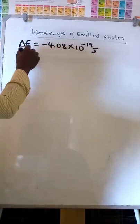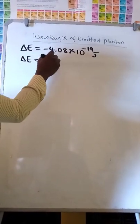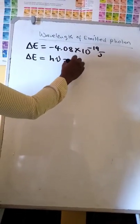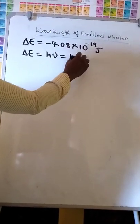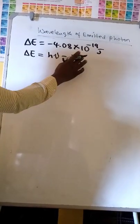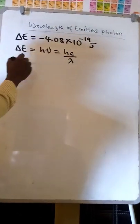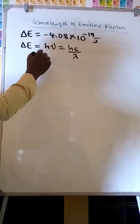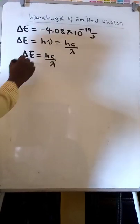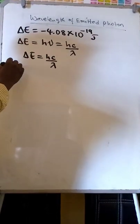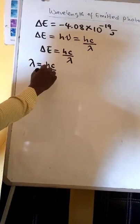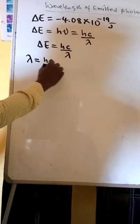We know that delta E is equal to h-nu, which is equal to hc over lambda. We know that frequency is equal to speed of light over lambda. So delta E is equal to hc over lambda. Then we make lambda the subject of the formula: lambda, which is wavelength, is equal to hc over delta E.